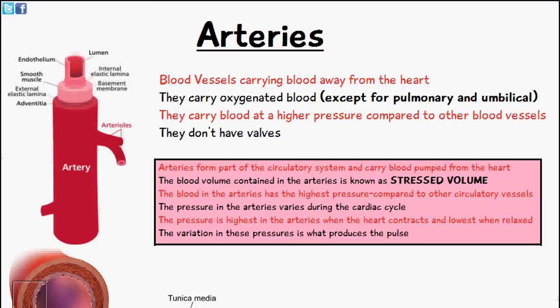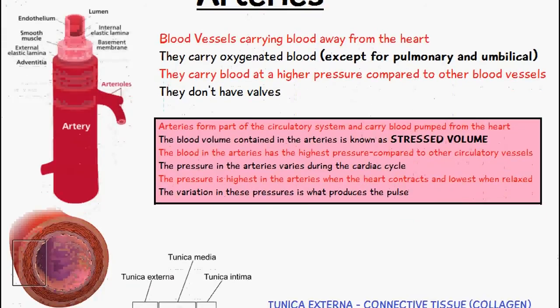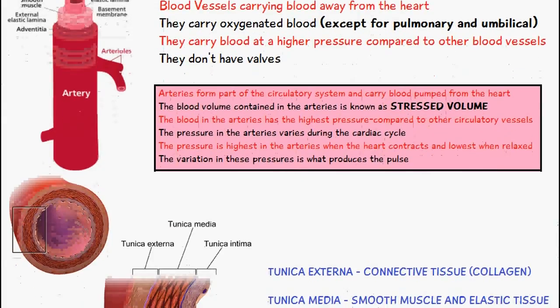Arteries carry blood at a higher pressure compared to the other blood vessels and they don't have valves. Arteries form part of the circulatory system. The blood volume contained in the arteries is known as stressed volume. The blood in the arteries has the highest pressure compared to the other circulatory vessels, and the pressure inside the arteries varies according to the cardiac cycle.